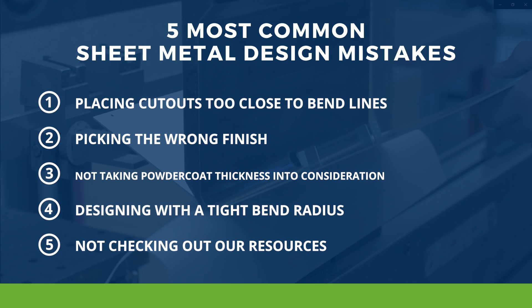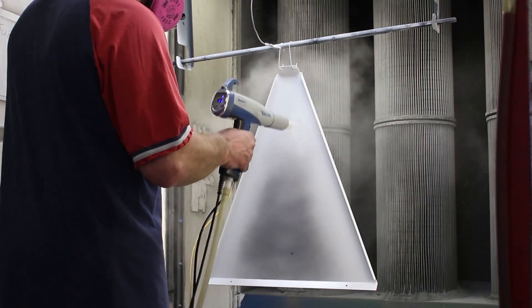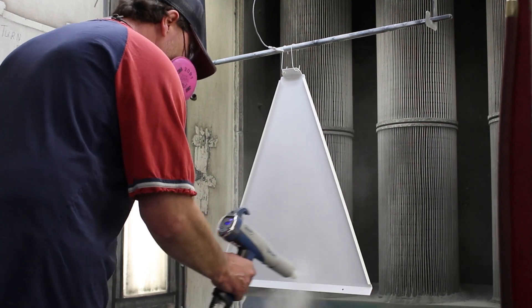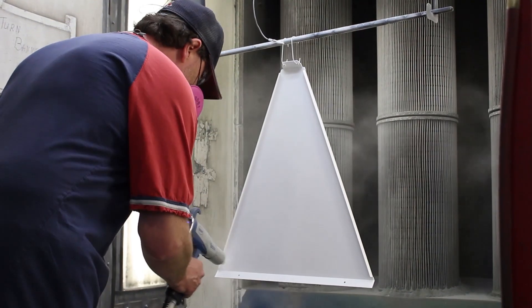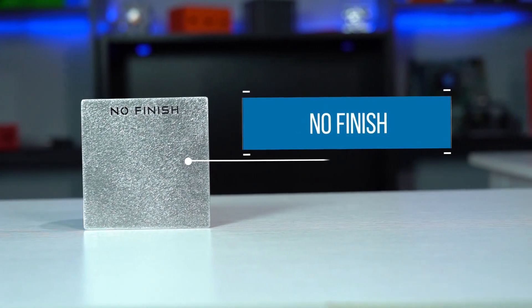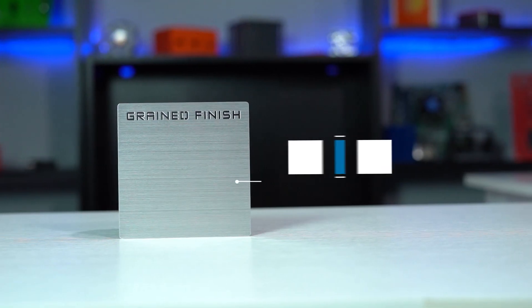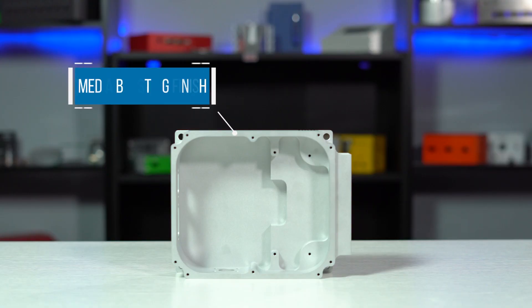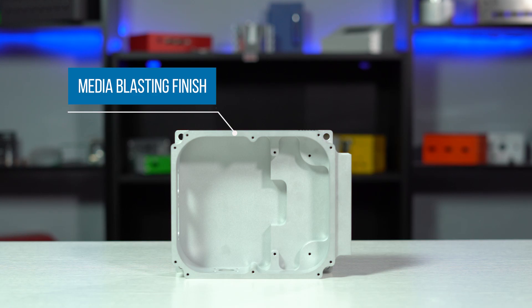For common mistake number two: picking the wrong finish or not using one when you need one for your end application. Generally, a finish for a powder enclosure serves two different purposes — protection and aesthetics. At Protocase, a common finish is powder coat, as it serves both purposes. It can prevent minor scratches and give your part or enclosure a very vibrant look. However, there are instances where a bare metal finish is required. We have no-finish, which is best for economics but not aesthetics, and grain finish and media blasting finish, which is the most aesthetically pleasing of the bare metal finishes. Graphics can be applied with digital print or silk screen and still look great with these finishes.